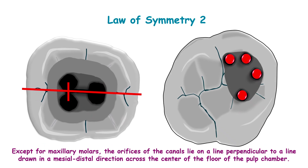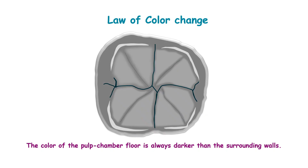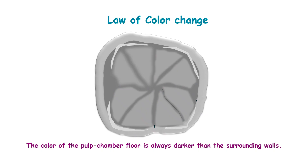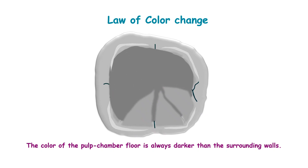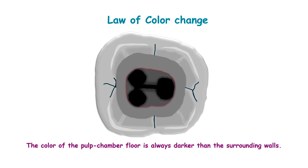Law of symmetry 2 also does not apply to maxillary molars. The color of the pulp chamber floor is always darker than the surrounding walls. The red line indicates the pulp chamber floor — it is darker than the surrounding walls.